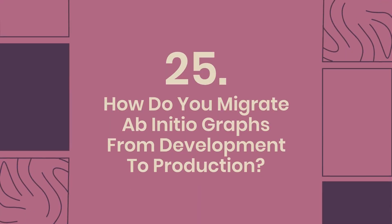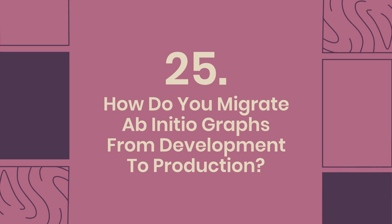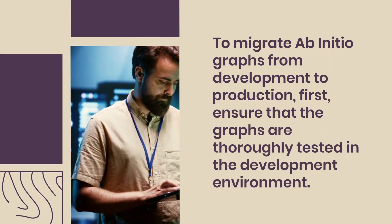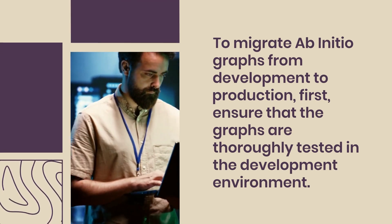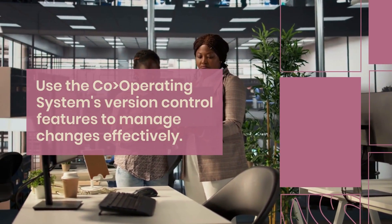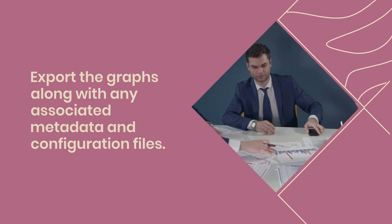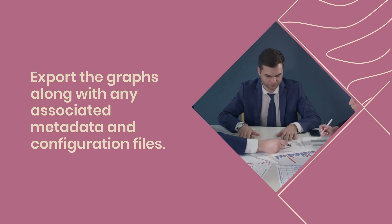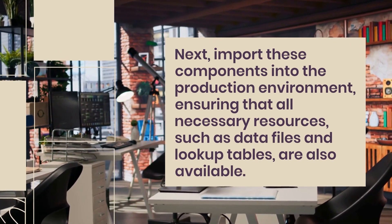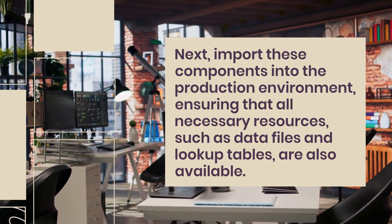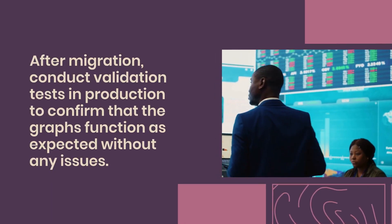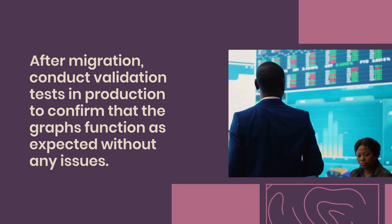Question 25: How do you migrate AbInitio graphs from development to production? To migrate AbInitio graphs from development to production, first ensure that the graphs are thoroughly tested in the development environment. Use the co-operating system's version control features to manage changes effectively. Export the graphs along with any associated metadata and configuration files. Next, import these components into the production environment, ensuring that all necessary resources such as data files and lookup tables are also available. After migration, conduct validation tests in production to confirm that the graphs function as expected without any issues.